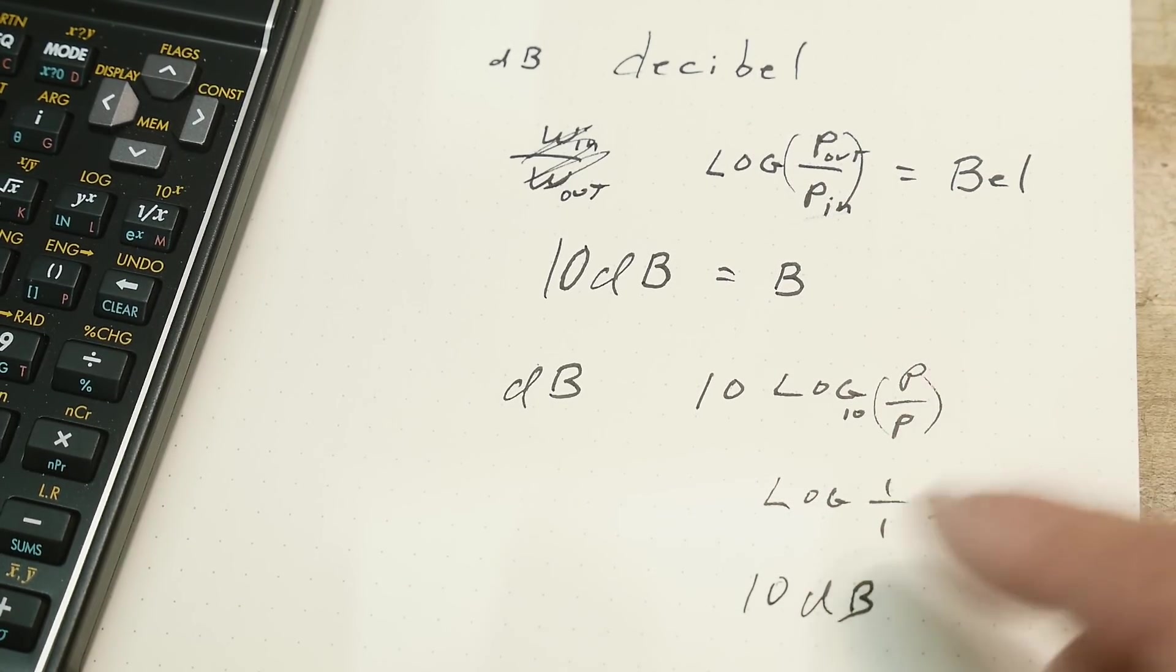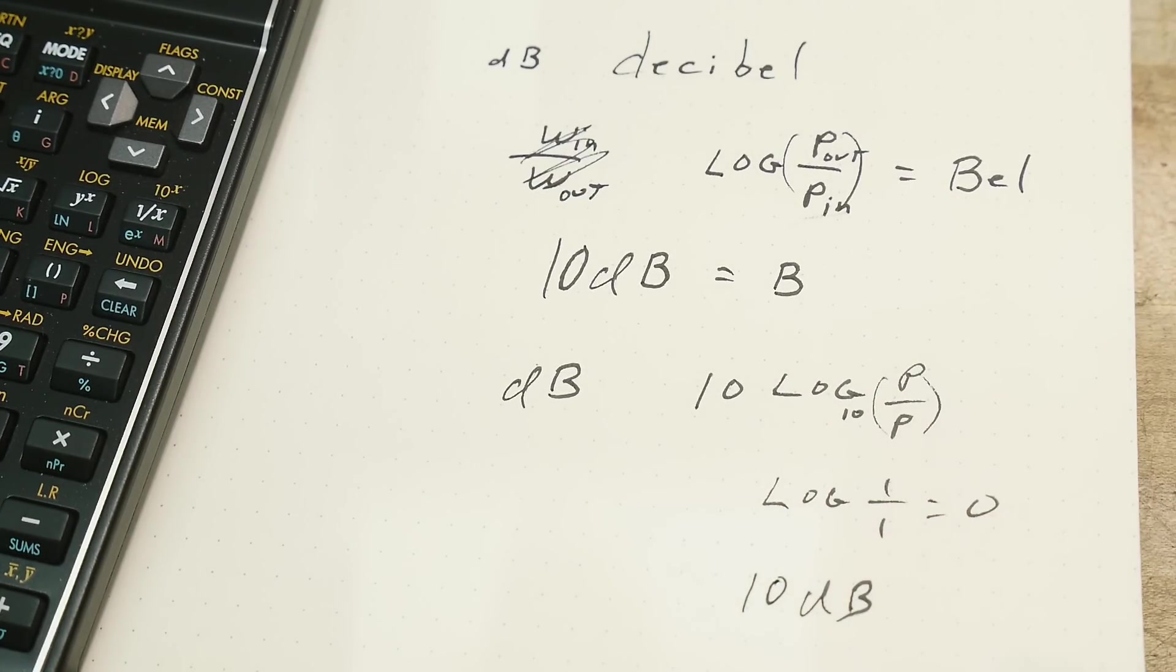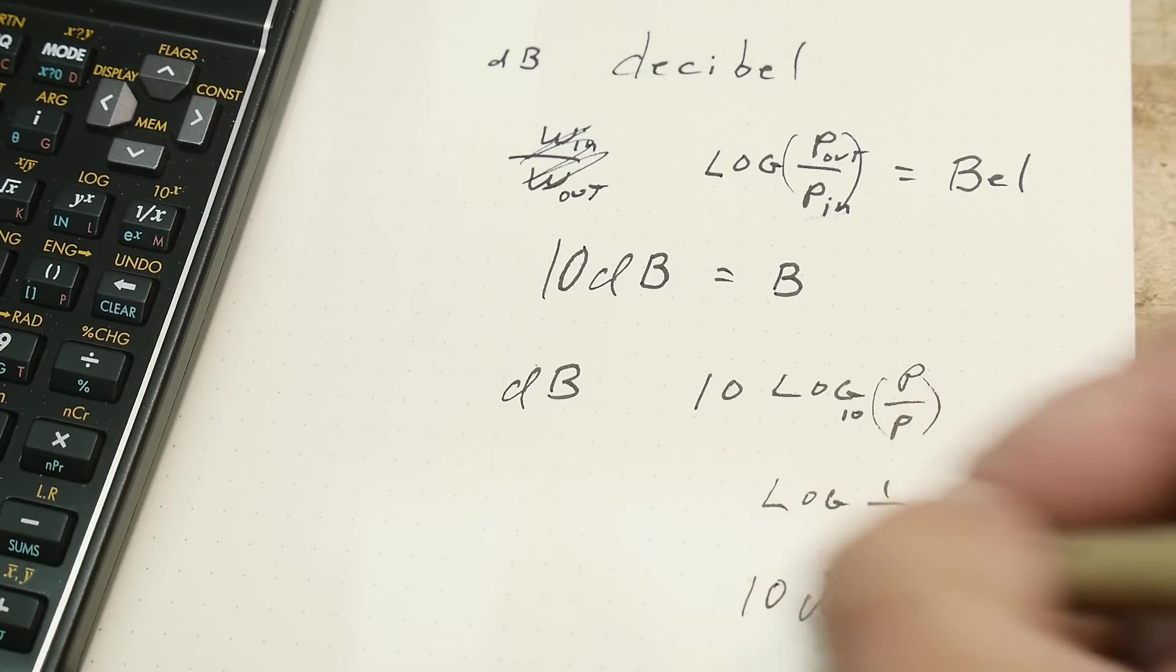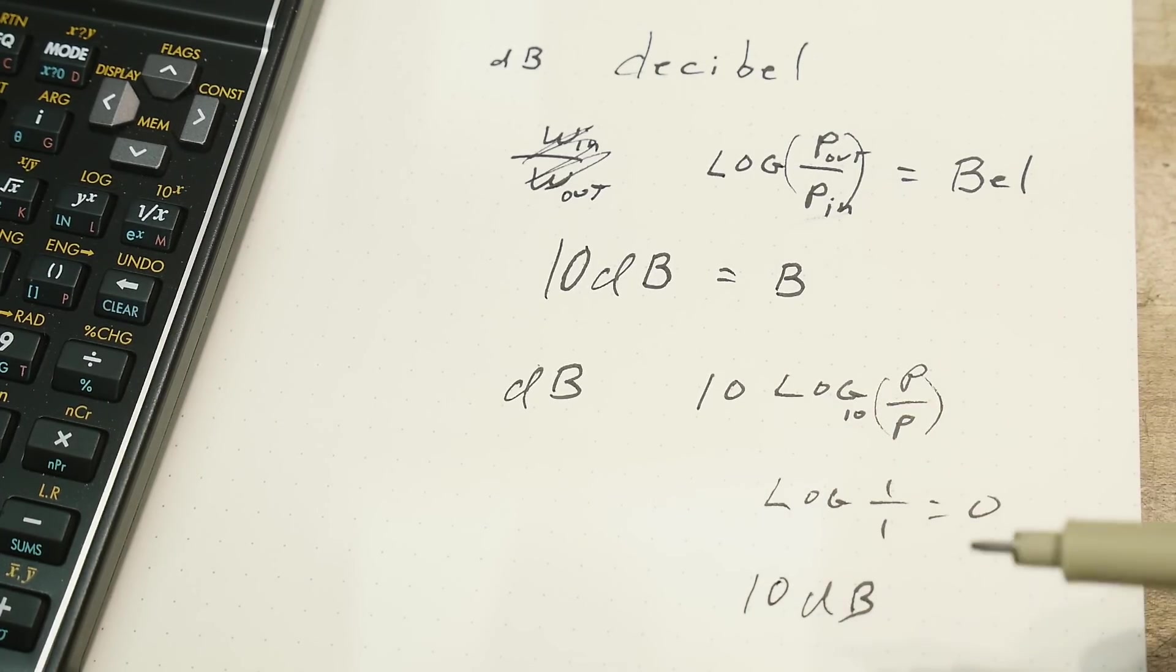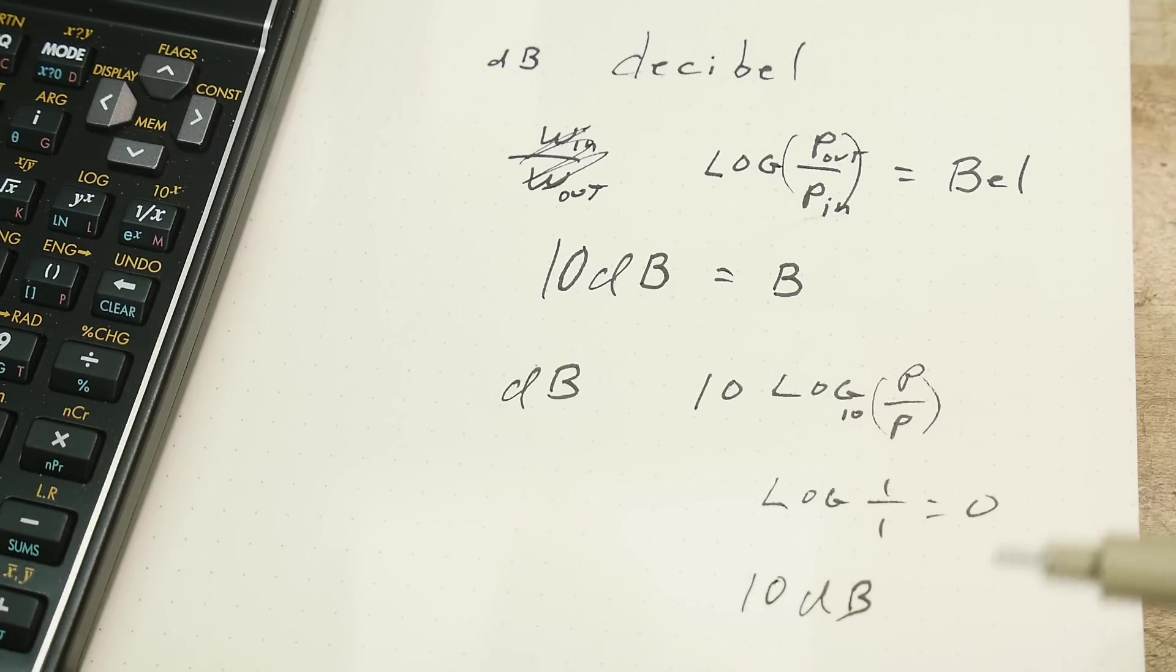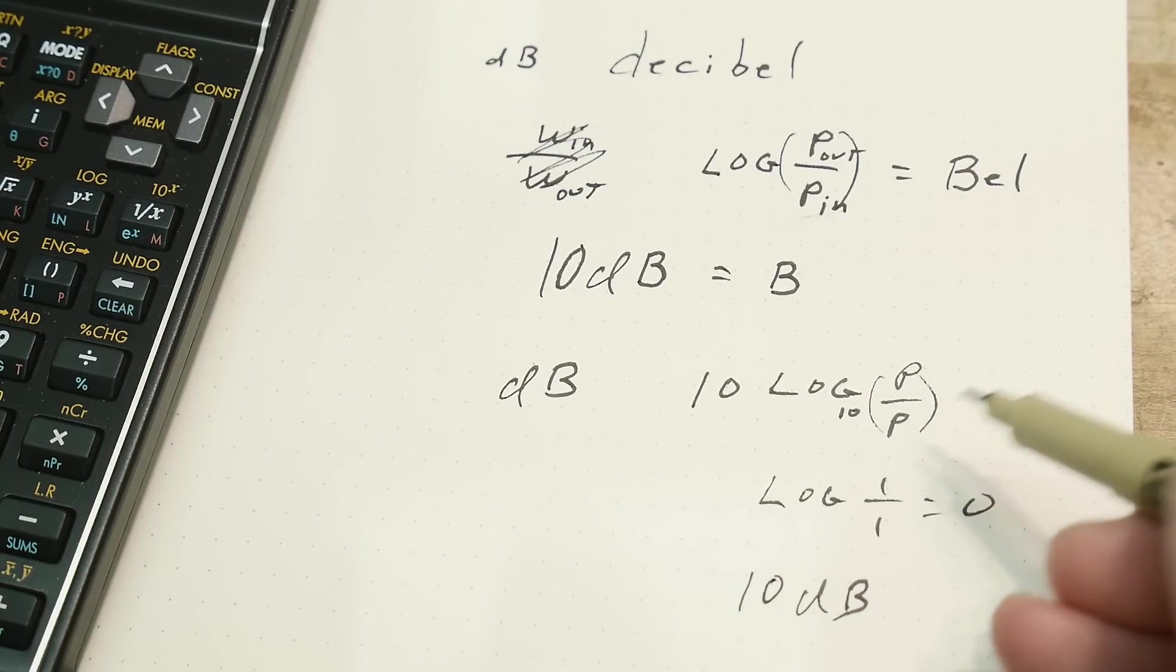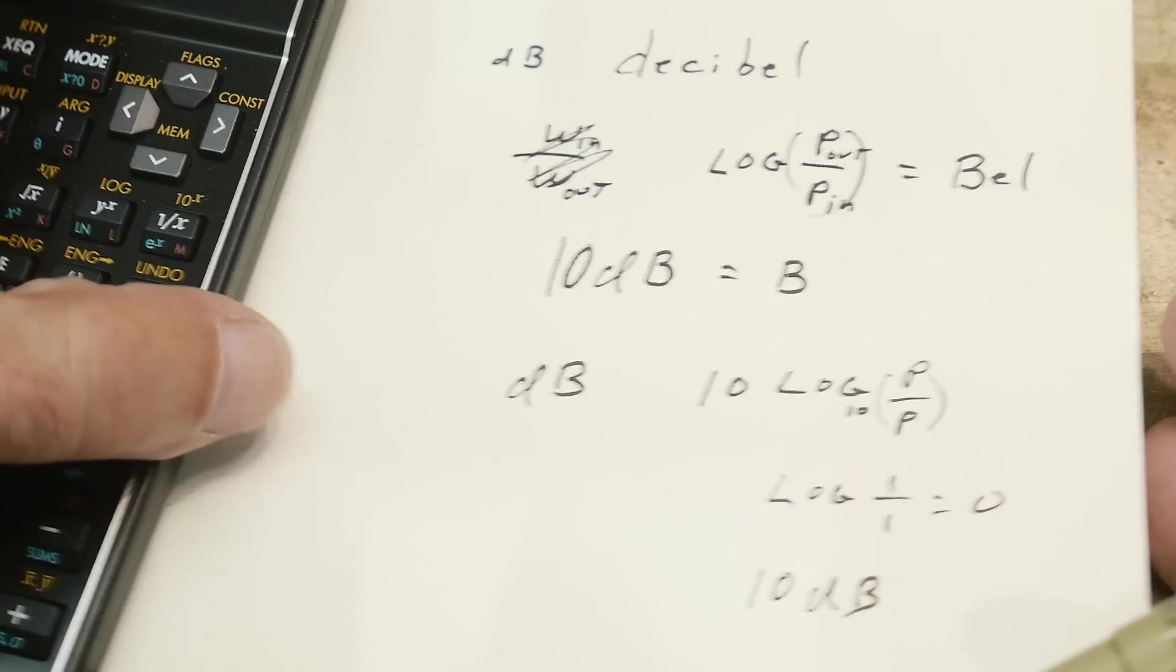10 dB is when you have 10 times the amount of power out that you have in. If you have one tenth, then it's minus 10 dB. That's just the way logarithms work. The takeaway here is that it's logarithm base 10 and it's power over power.